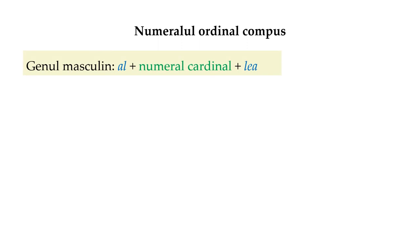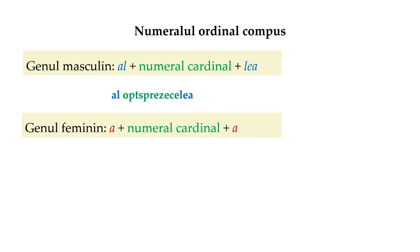Numeralul ordinal compus are forme pentru genul masculin, alcătuite dintr-un numeral cardinal, la care sunt adăugate componentele al și lea, ca în exemplu: al 18-lea. Formele de genul feminin sunt alcătuite dintr-un numeral cardinal, la care sunt adăugate componentele A, respectiv A, ca în exemplu: A3-a.